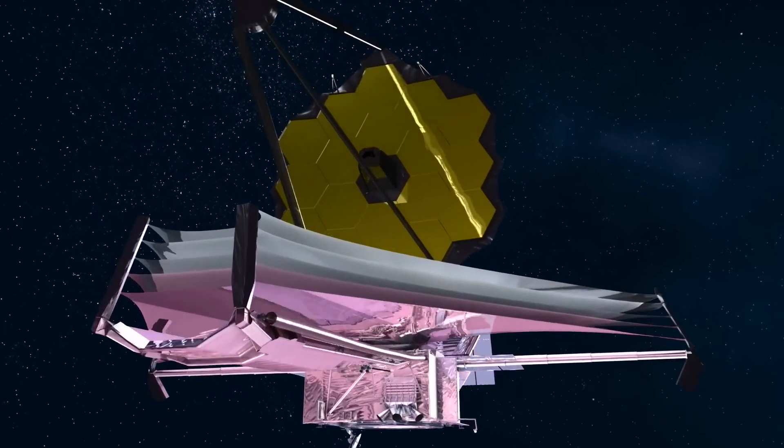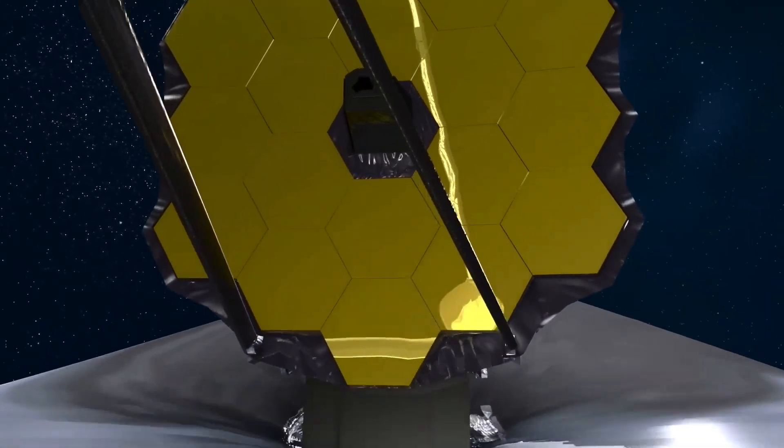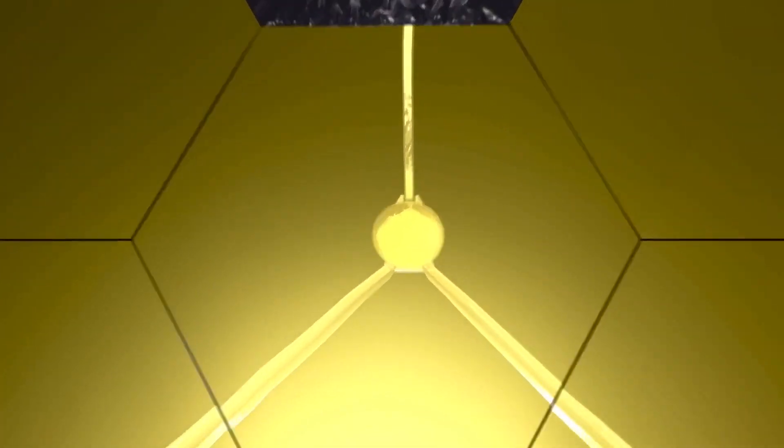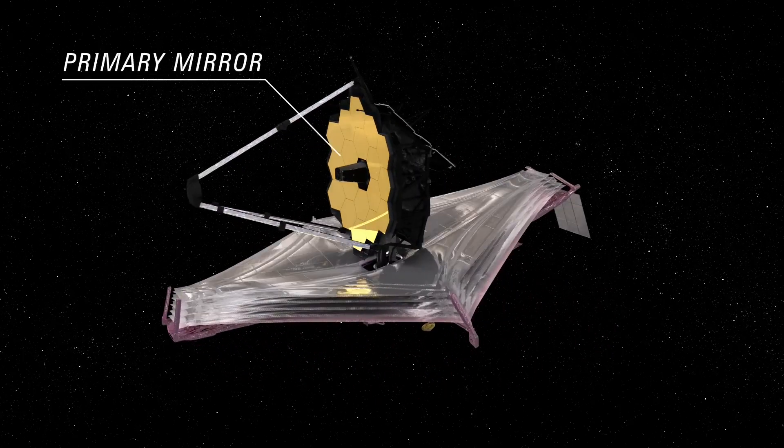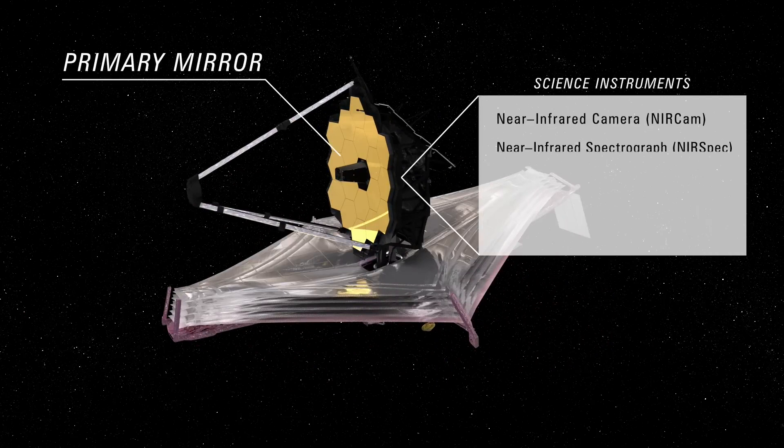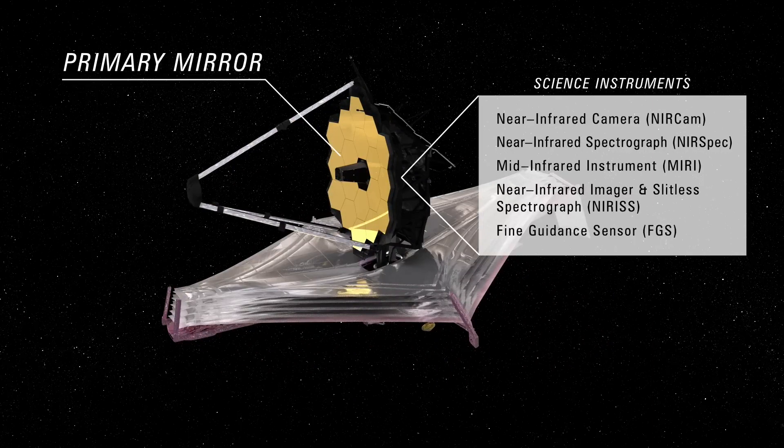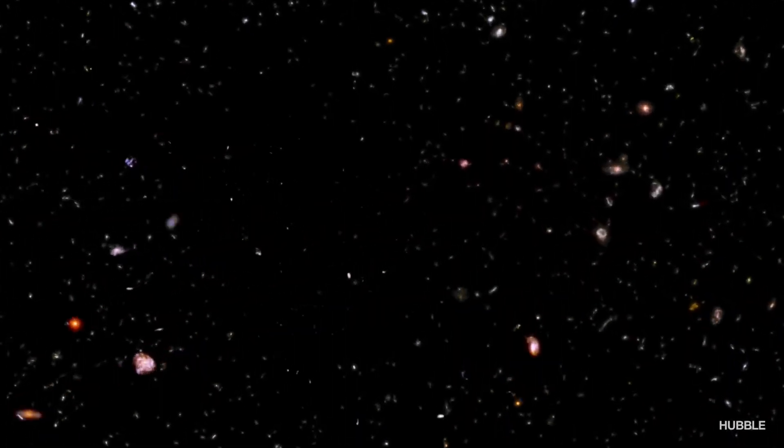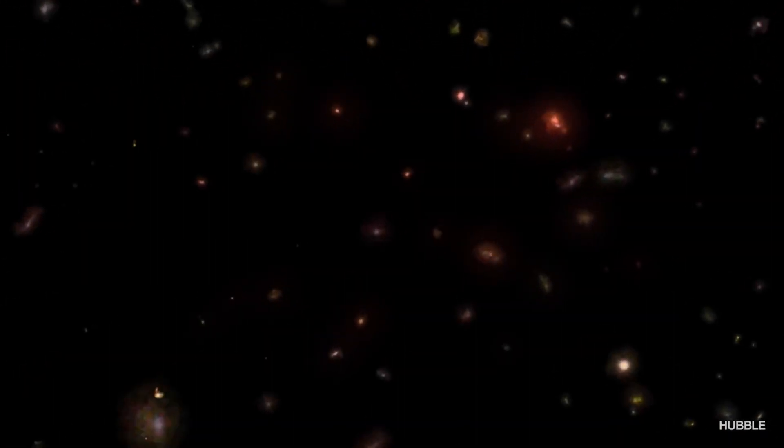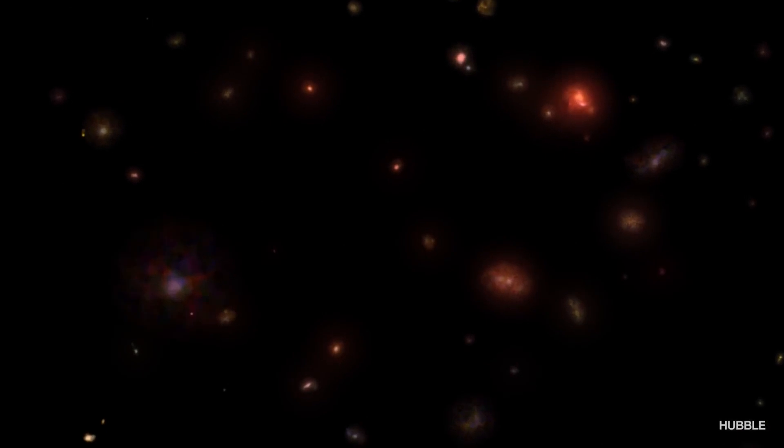The James Webb Space Telescope is specially designed to detect the first galaxies. Webb's large mirror and sensitive instruments will enable it to collect more infrared light than we've ever seen, allowing the first galaxies to emerge into view.